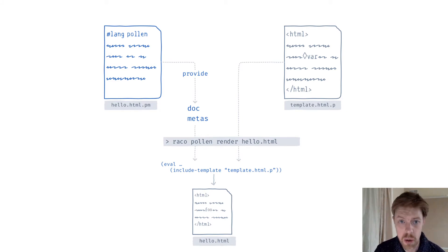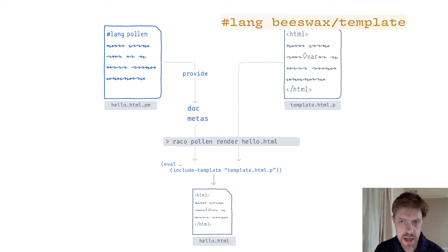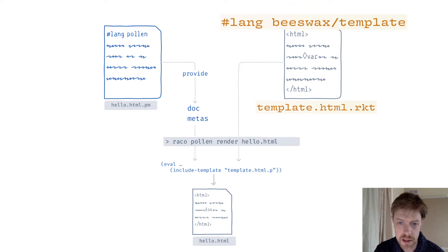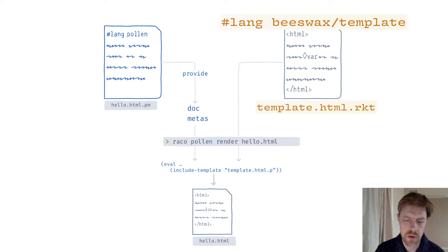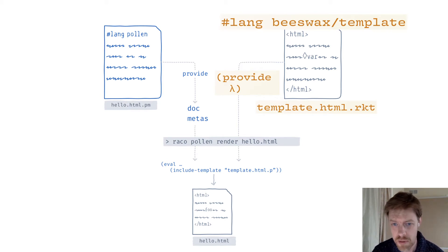So, how does Beeswax propose to change or augment this scenario? Well, all I'm really interested in altering is the template portion. Let's take those template files and give them a hashlang — in this case, Beeswax template — and make those template files proper Racket modules. We would also then give them a more normal Racket file extension. So now we have a template as a Racket module.